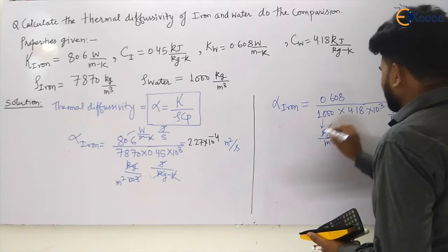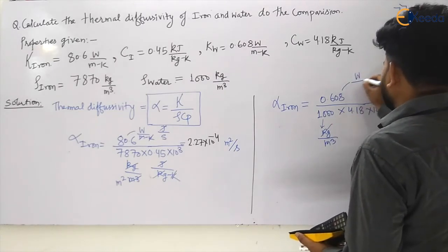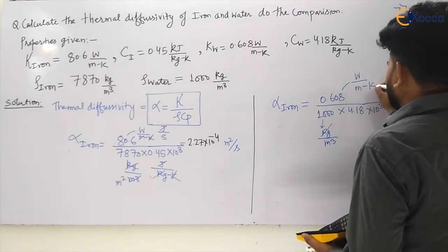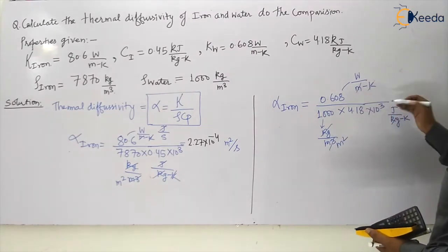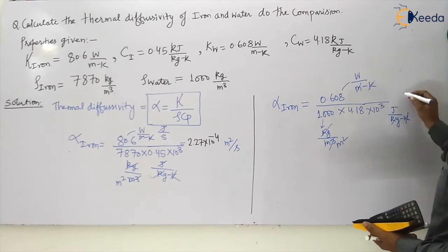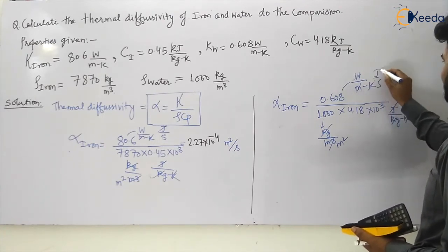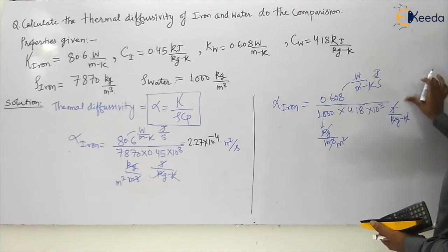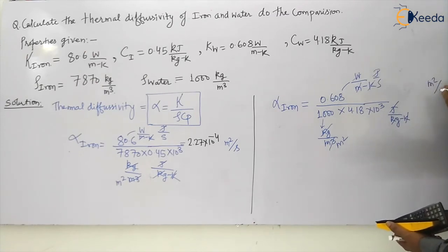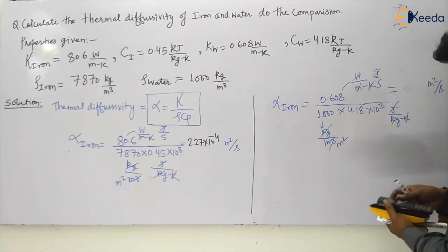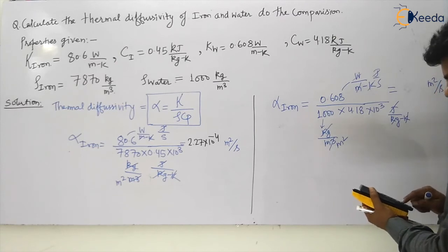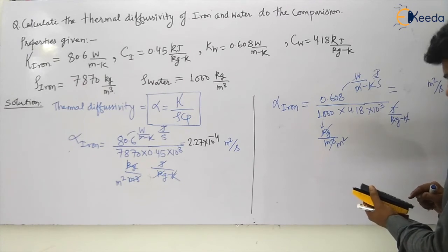Again, kg will go and this will be watt per meter Kelvin. So again meter will go, meter square will be remaining and Kelvin will go. The remaining part, joule will go, so this will be in joule per second. So again this will become meter square per second, and this will be 4.18 into 10 to the power 3. 0.60 divided by this.